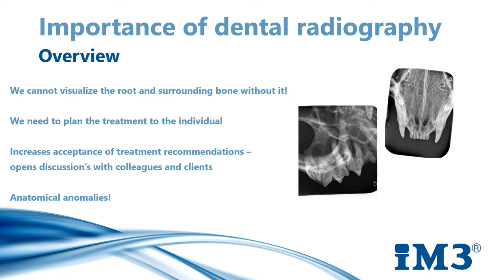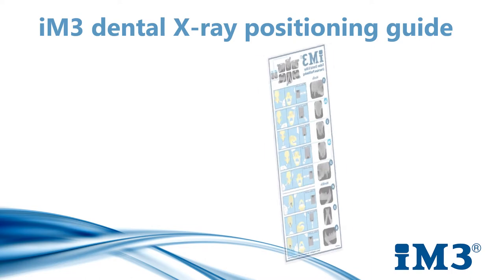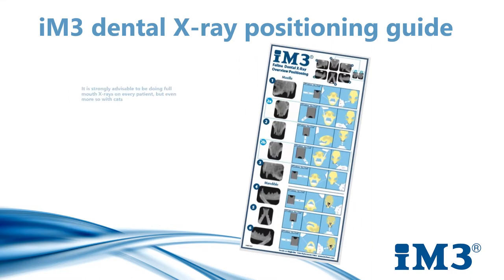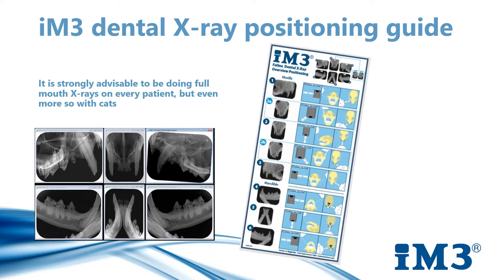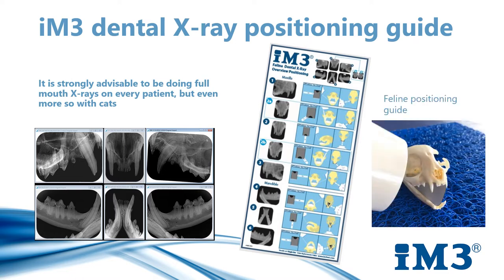Anatomical anomalies — any teeth with additional roots, fused roots, and even supernumerary teeth all need to be imaged. It is strongly advisable to be doing full mouth x-rays on every patient, but even more so with cats. X-rays can be done quickly following our routine six x-ray positioning regime. Our set angle positioners assist with achieving periapical x-rays without thinking about challenging bisecting angles. Please go to IM3Direct on YouTube where you can watch our step-by-step guide on achieving full mouth x-rays in as little as six views.